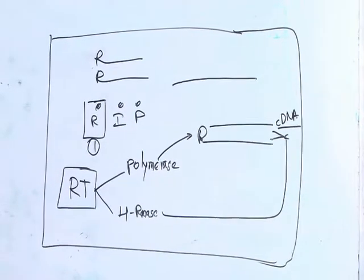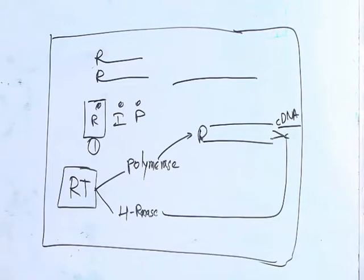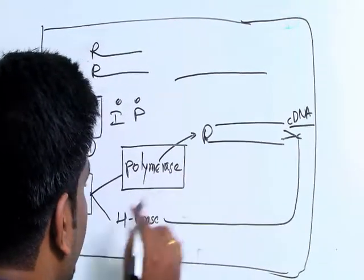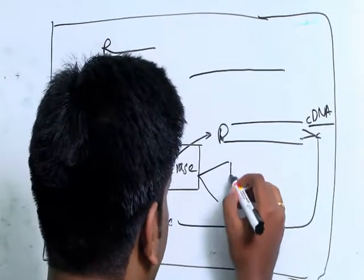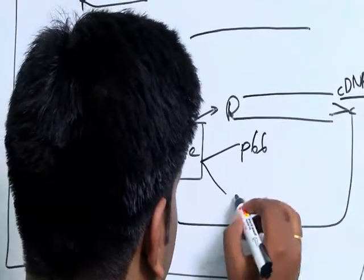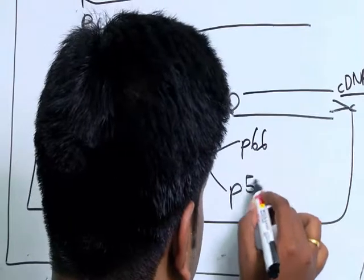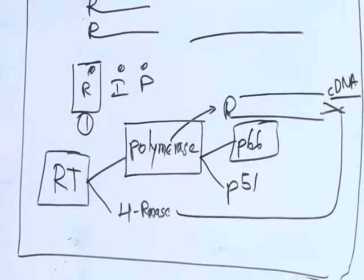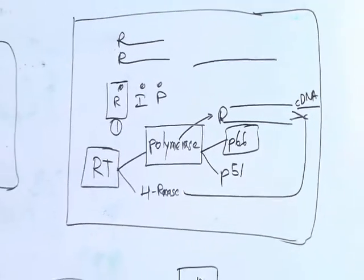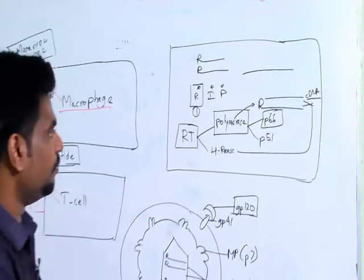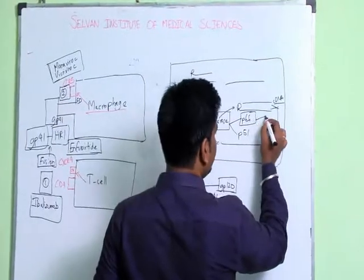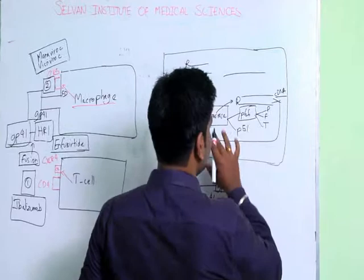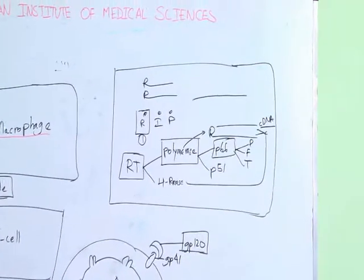We have a group of drugs which act on the reverse transcriptase, for which we need to know the structure of the polymerase. It has two subunits: the P66 subunit and the P51 subunit. The P66 subunit consists of three parts — the palm, fingers, and thumb.